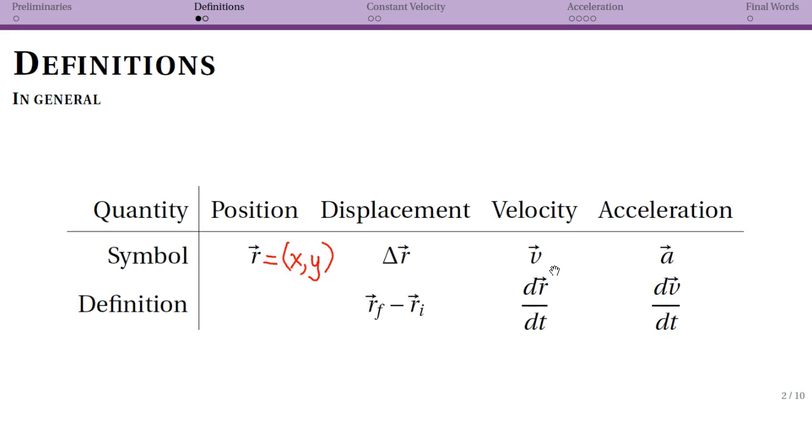Later we're going to be making distinctions between average velocity and instantaneous velocity. The definitions I'm giving you here are for instantaneous velocity. Average velocity is normally going to be useful when these things are constant, such that our instantaneous velocity or instantaneous acceleration is equal to a constant, which means that over time integrating a constant gives you the same average.